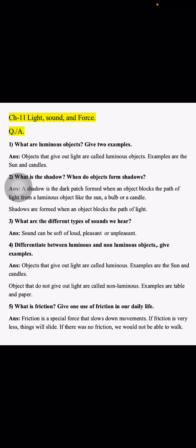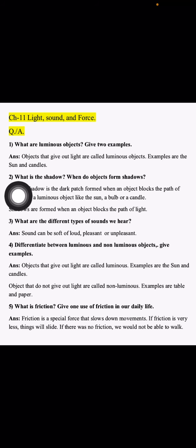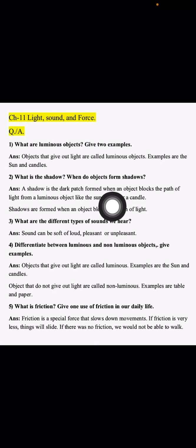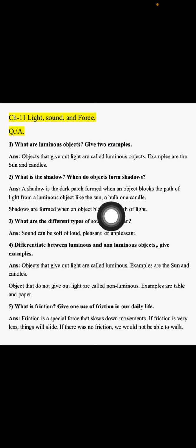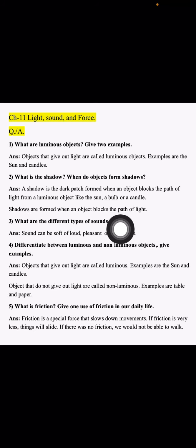Question number two: What is a shadow? When do objects form shadows? The answer is: A shadow is a dark patch formed when an object blocks the path of light from a luminous object like the sun, a bulb, or a candle. When a luminous object's light is passing and an object comes in between and blocks it, a dark patch appears in front — we call it a shadow.